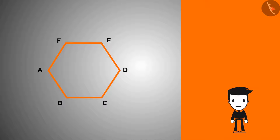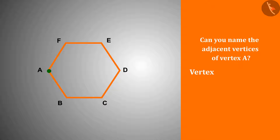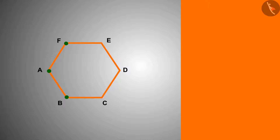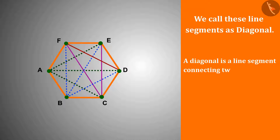If we take this polygon and name its vertices, the adjacent vertices of vertex A are vertex B and vertex F. Now connect vertex A with the vertices which are not adjacent to it. By doing this with all the vertices of this hexagon, we get some line segments called diagonals. The diagonal of a polygon is formed by connecting any two vertices except adjacent vertices.